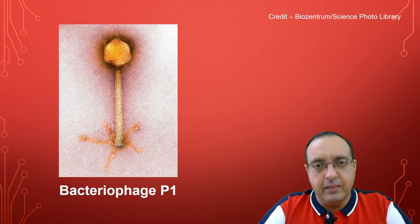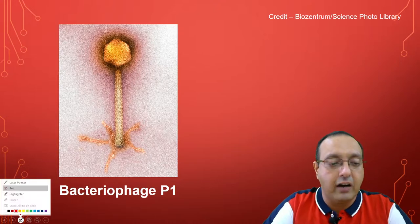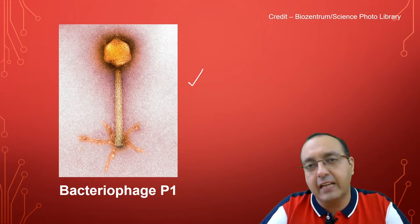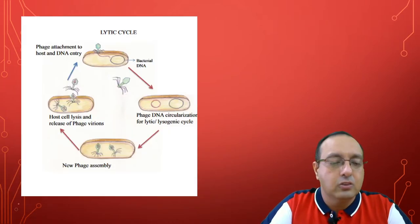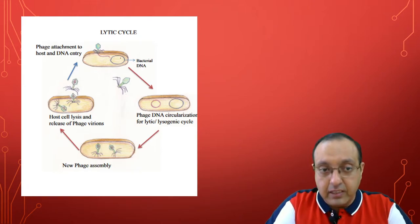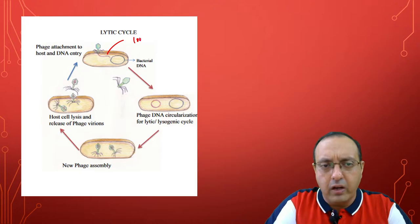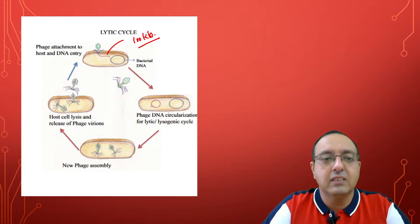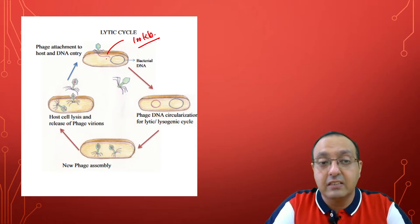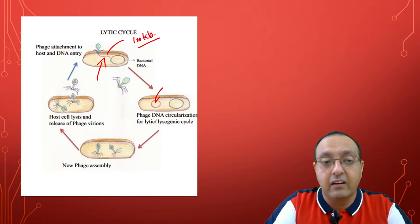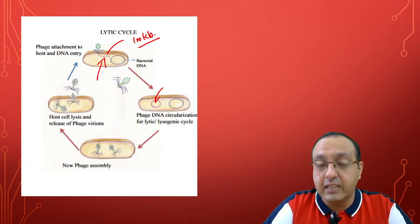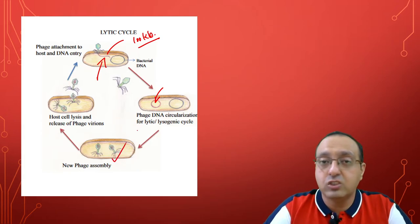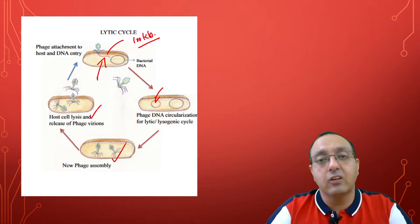The CRE-LOXP system is based on bacteriophage P1, a tailed fiber phage which infects E. coli and has lytic and lysogenic life cycles. In the lytic life cycle, it infects the bacterium and injects its double-stranded DNA genome of about 100 kb. One important point is that the linear genome becomes circular as soon as it enters the bacterial cell. There is circularization, then production of phage proteins, packaging, assembly of phage particles, host cell lysis, and the cycle continues.